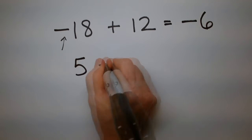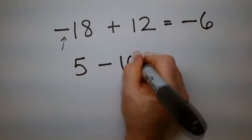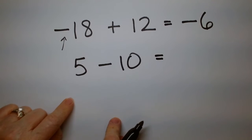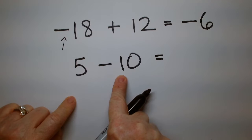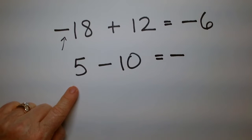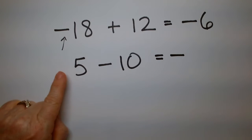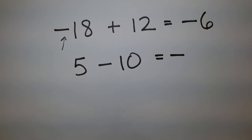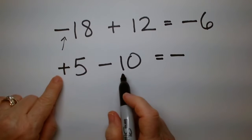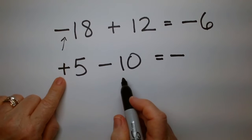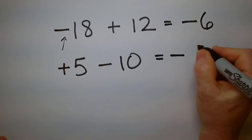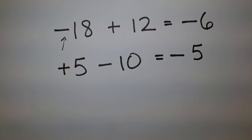What is 5 minus 10? Who's bigger — the 5 or the 10? The 10 is bigger; it's got a negative sign, so we write that down. Notice there's nothing in front of the 5 — if there's nothing, we assume it's a positive; it's implied. So the difference between 5 and 10 gives us minus 5.